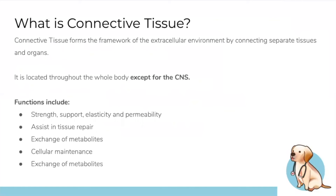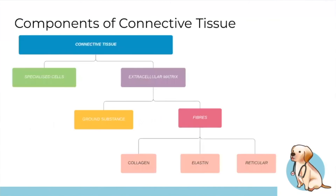Connective tissue forms a framework for the extracellular environment. It's located throughout the body except in the central nervous system. It supports structures, provides strength, and facilitates metabolic exchange. Examples include tendons and ligaments. Connective tissue is made up of specialized cells and an extracellular matrix containing ground substance and fibers — collagen, elastin, and reticular.